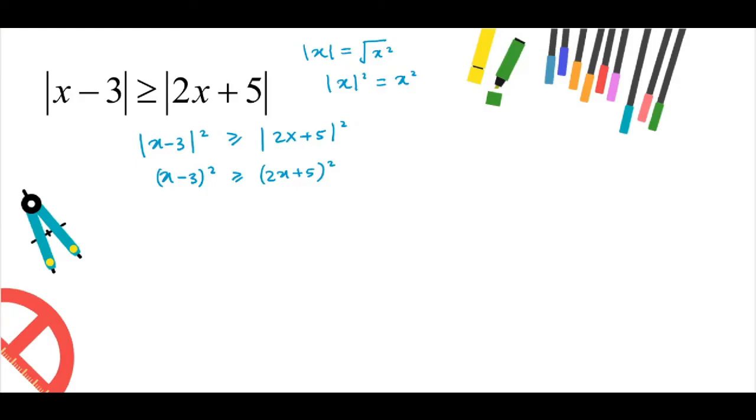Expanding this quadratic expression will give me x squared minus 6x plus 9 greater than or equals to 4x squared plus 20x plus 25.